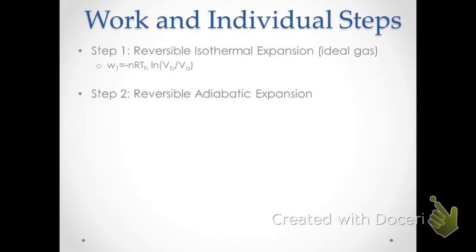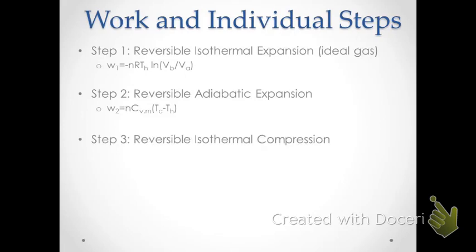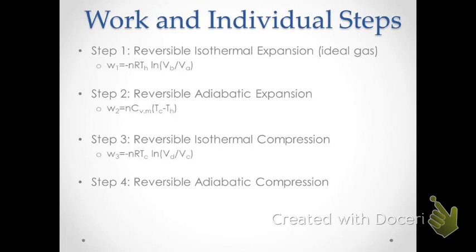For step two, the reversible adiabatic expansion, assuming an ideal gas, work equals delta U, which equals nC_V times the temperature differential. Step three, also an isothermal process, has a very similar equation to step one, with volumes corresponding to the final and initial volumes for that step. For step four, the reversible adiabatic compression, we again have an equation dependent on heat capacity and the temperature differential.